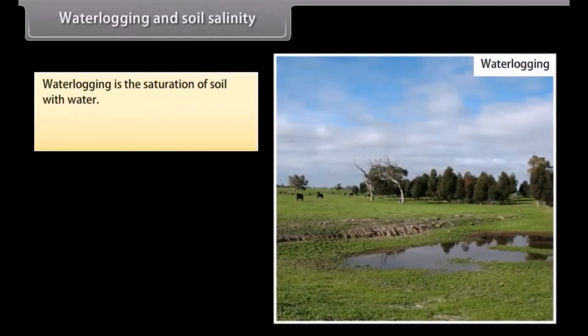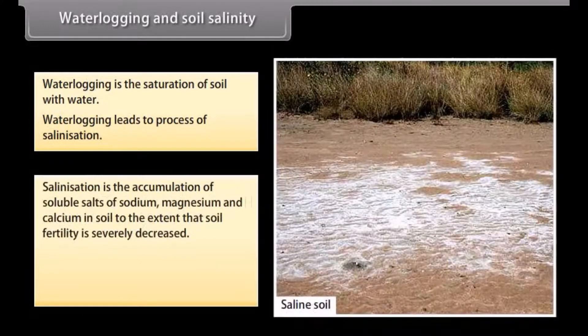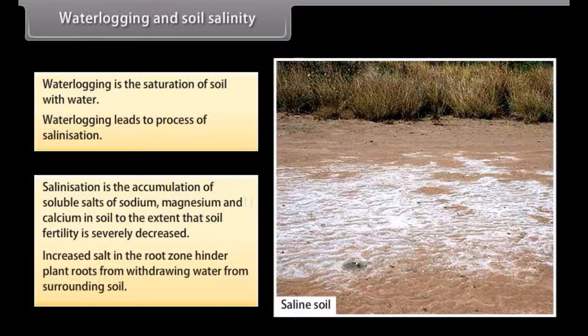Waterlogging is the saturation of soil with water. Waterlogging leads to the process of salinization. Salinization is the accumulation of soluble salts of sodium, magnesium, and calcium in soil to the extent that soil fertility is severely decreased. Increased salt in the root zone hinders plant roots from drawing water from surrounding soil.